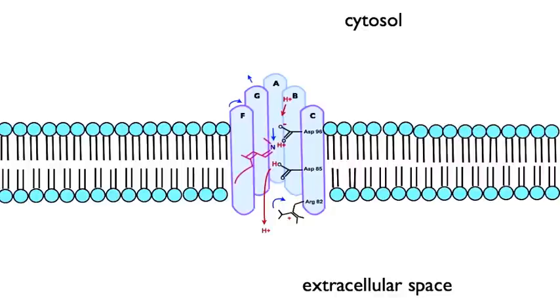The proton bound to aspartate 85 is transferred through a series of hydrogen bonds to water molecules as it is passed out into the extracellular space.